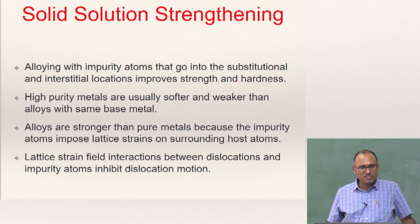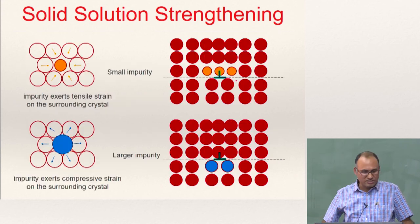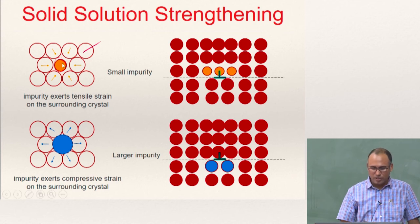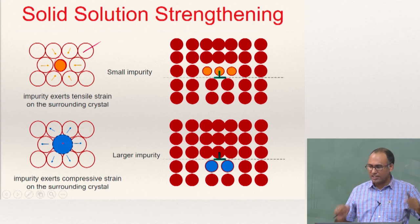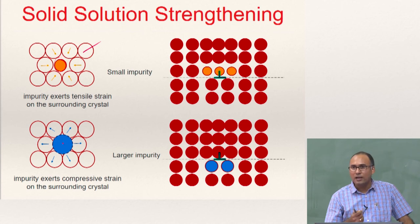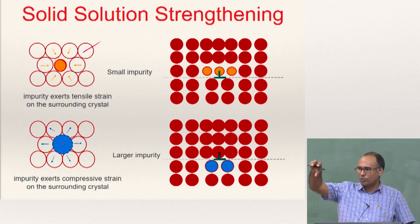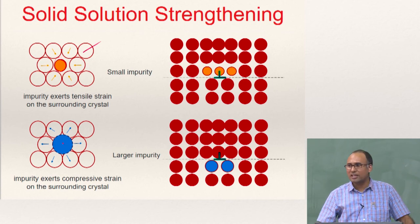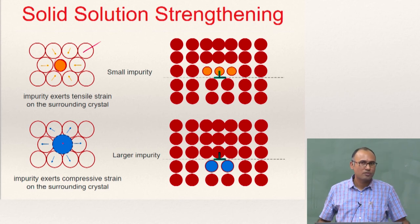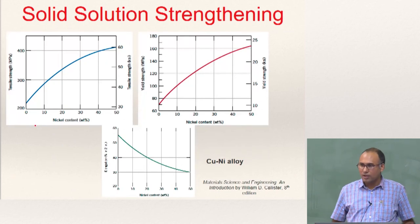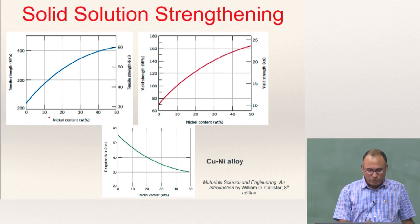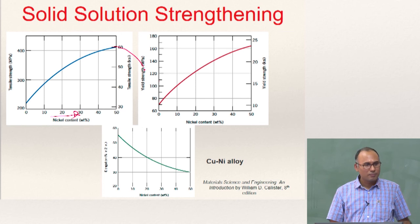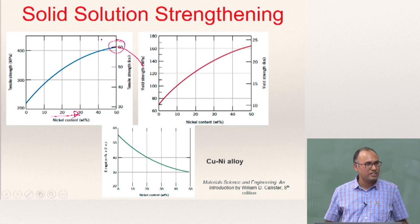Another mechanism is solid solution strengthening: you put impurities in the material. In a crystalline lattice, a small impurity creates a local tensile stress state around it, while a larger impurity creates a local compressive stress. That local stress state obstructs dislocation motion — just as a grain boundary creates a local stress field that dislocations interact with, impurities similarly hinder dislocation motion. This is a typical material property plot: when you increase the nickel content in a copper-nickel system, tensile strength increases but after some point it decreases again, forming a peak — it cannot continue to increase indefinitely.